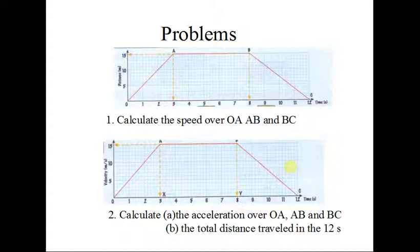These are the typical type problems you get in maths. You get given a graph. Calculate the speed over O to A and from A to B and from B to C and so on. And here are the solutions. Did you get them right?